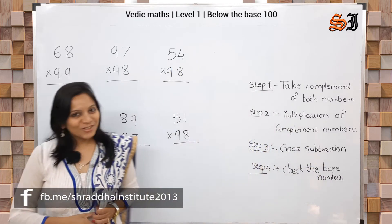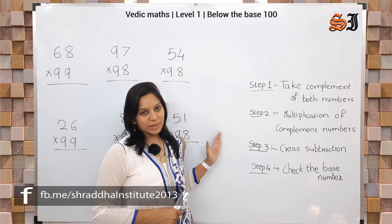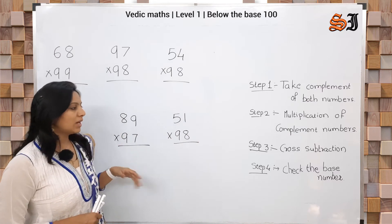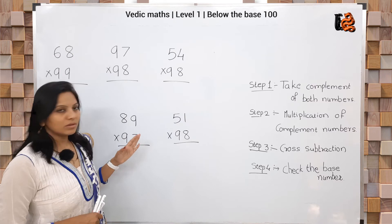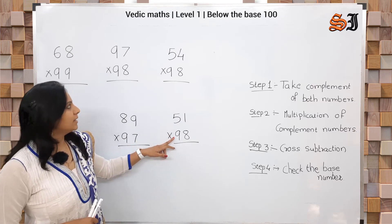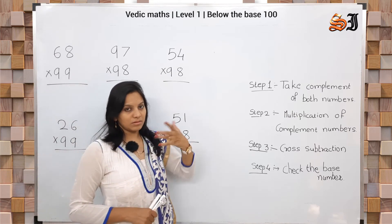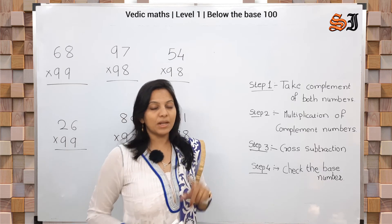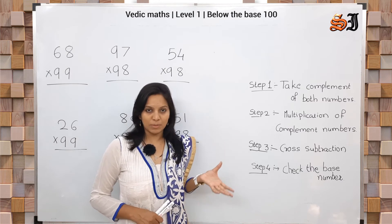Okay students, let's look at more examples with the same steps and same multiplication method. Numbers like 59, 51, 98, 54 — if any number below the base comes up, you can use this same trick to solve the problem.